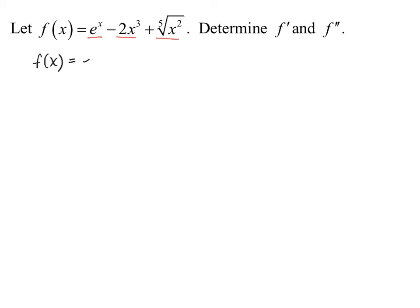However, that last term probably should be rewritten as a power function to make the derivative computation a bit easier. So the fifth root of x squared will be rewritten as x to the two-fifths power. We want to be able to use the power rule, which applies to x raised to a power of n, where the derivative of x to the nth power will be n times x raised to the n minus 1 power. Now let's go ahead and compute the derivative of each individual term.